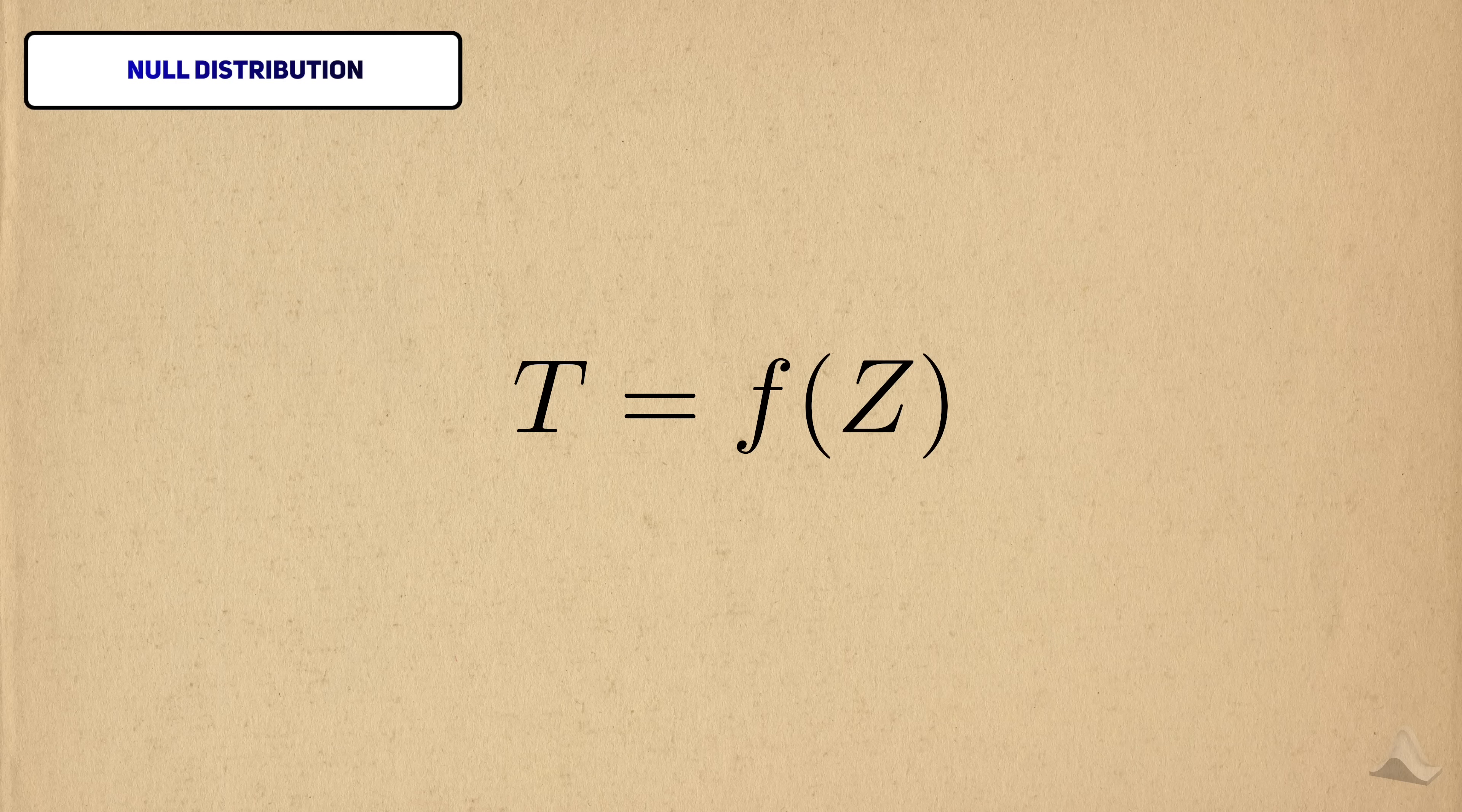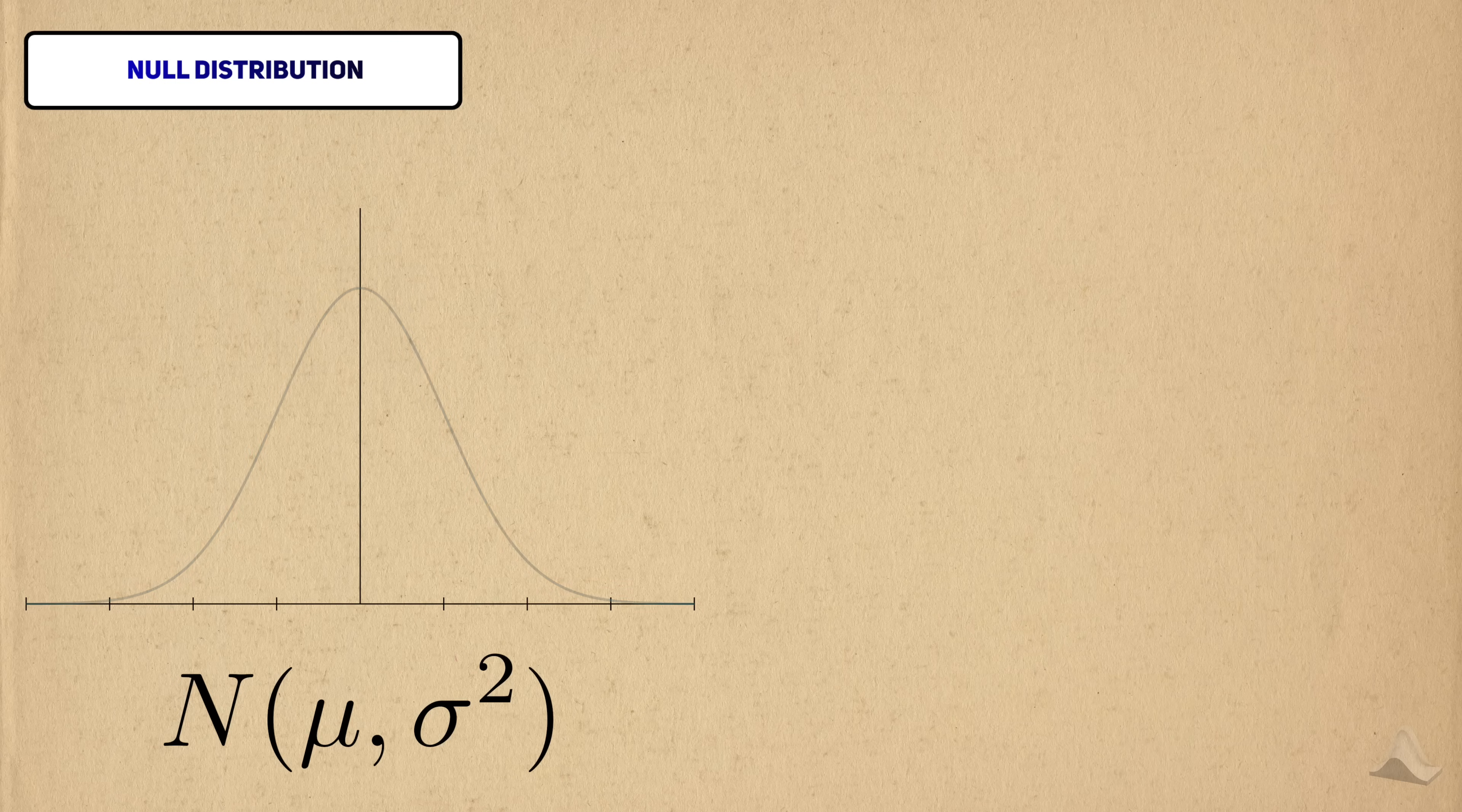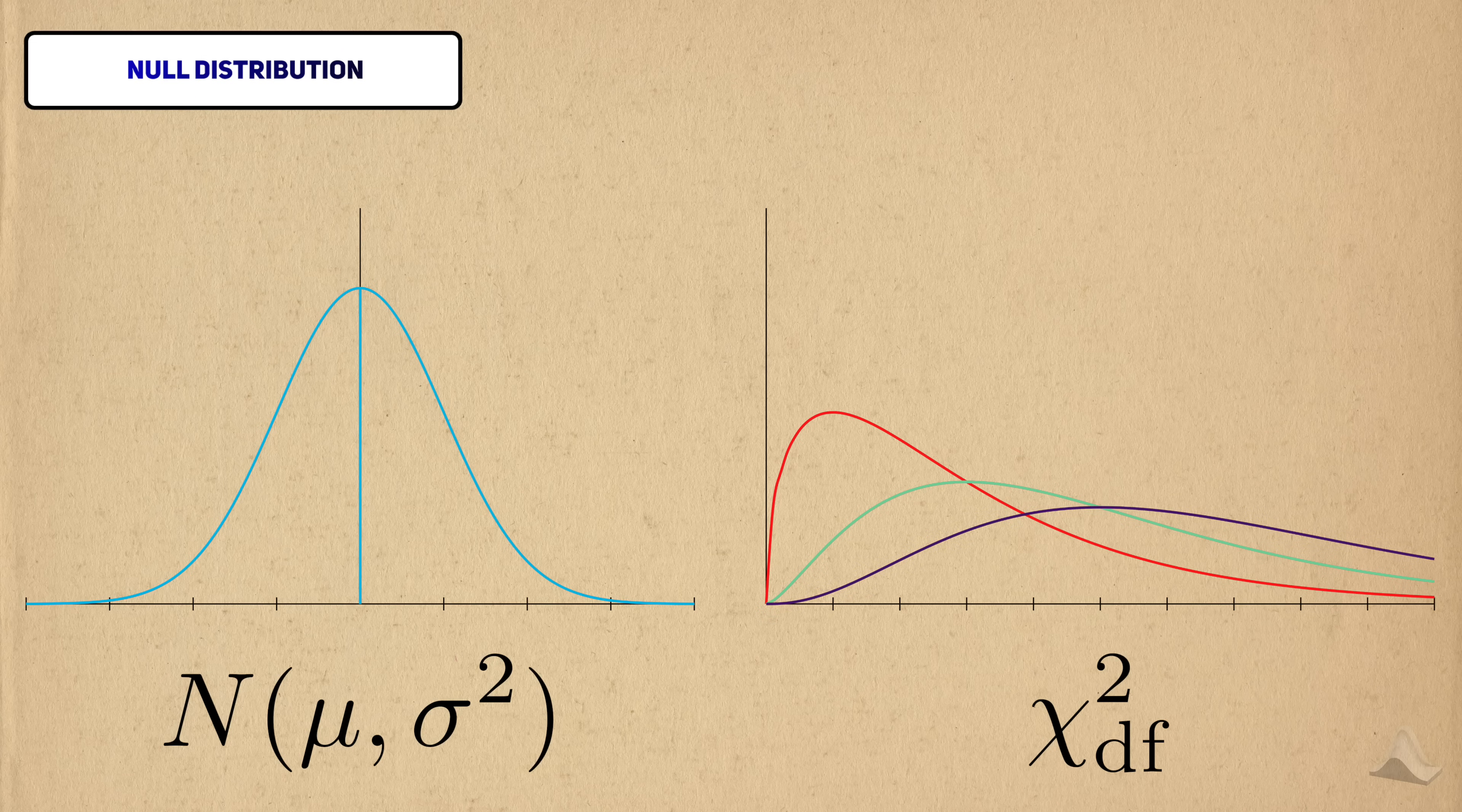The chi-squared distribution has a simple relationship to a standard normal. If you square a standard normal, then the resulting random variable is a chi-squared distribution with one degree of freedom. Just like how the mean and variance are the parameters for the normal distribution, the degrees of freedom is the parameter for the chi-squared distribution. Different degrees of freedom will give the chi-squared distribution a different shape.